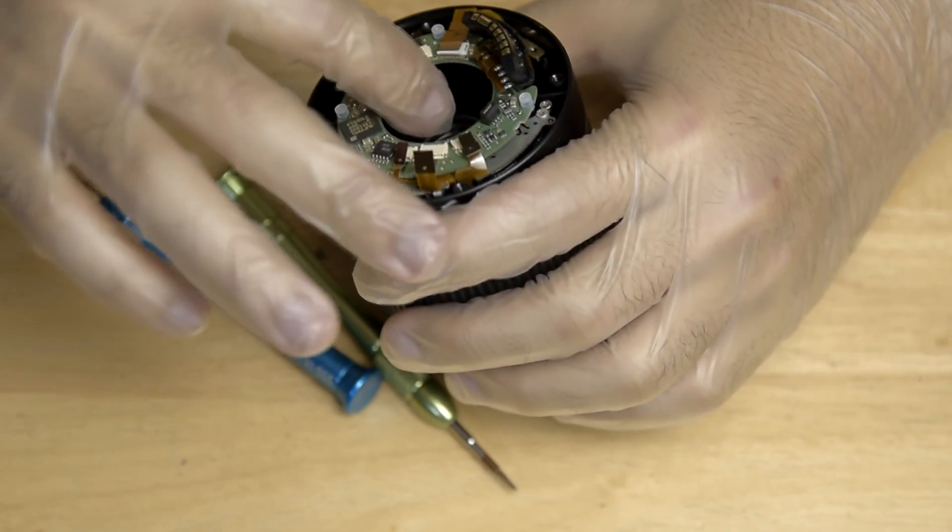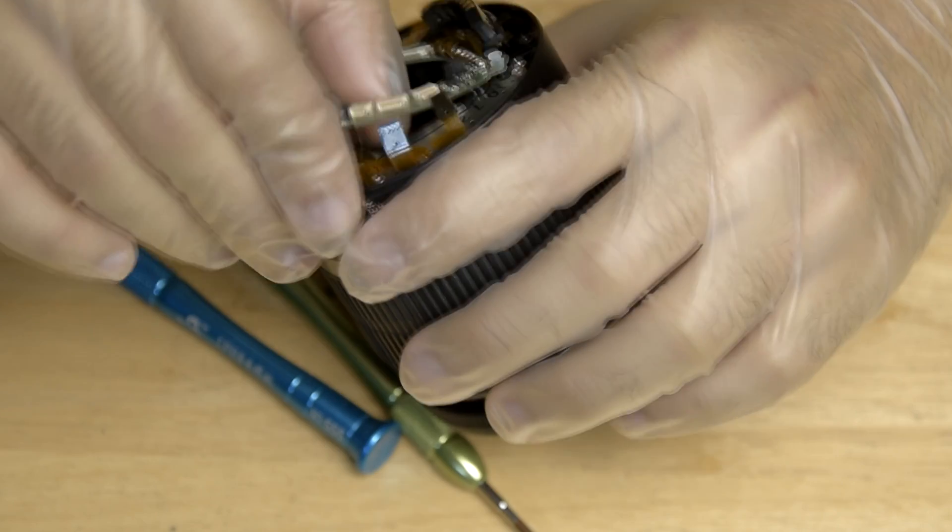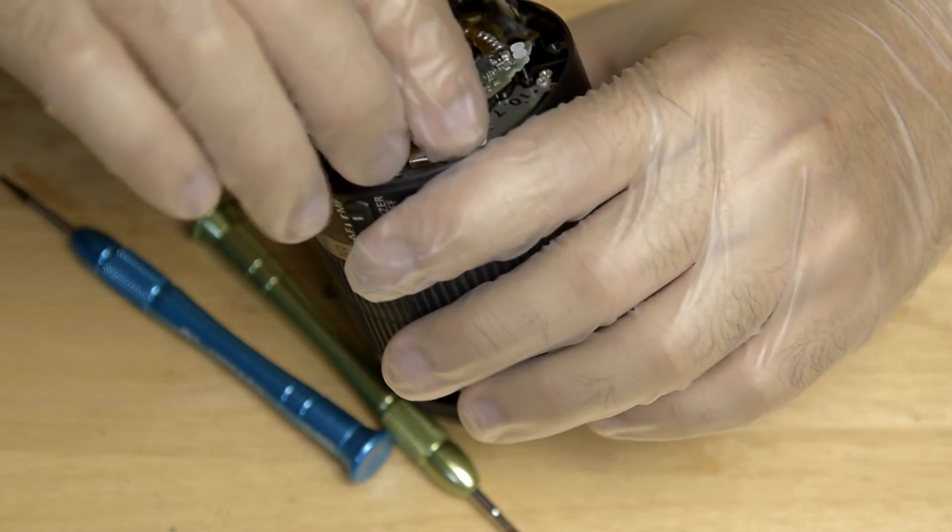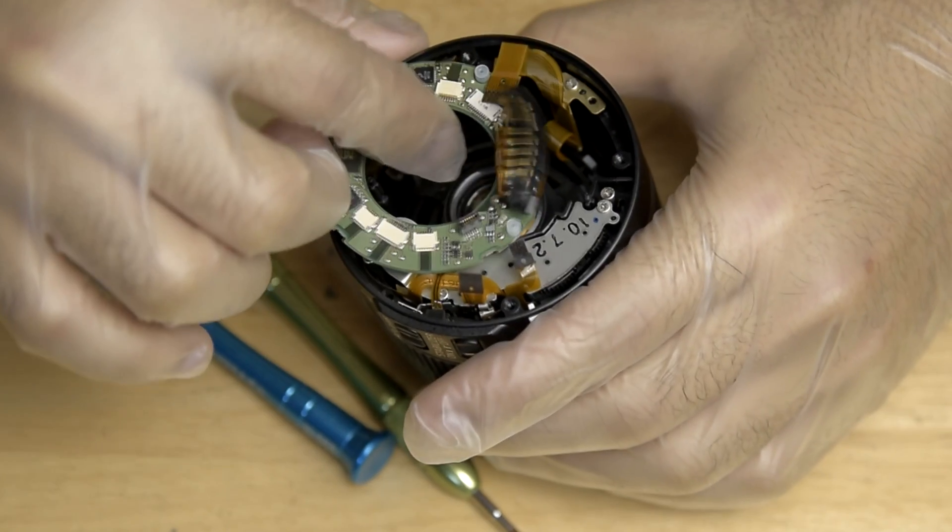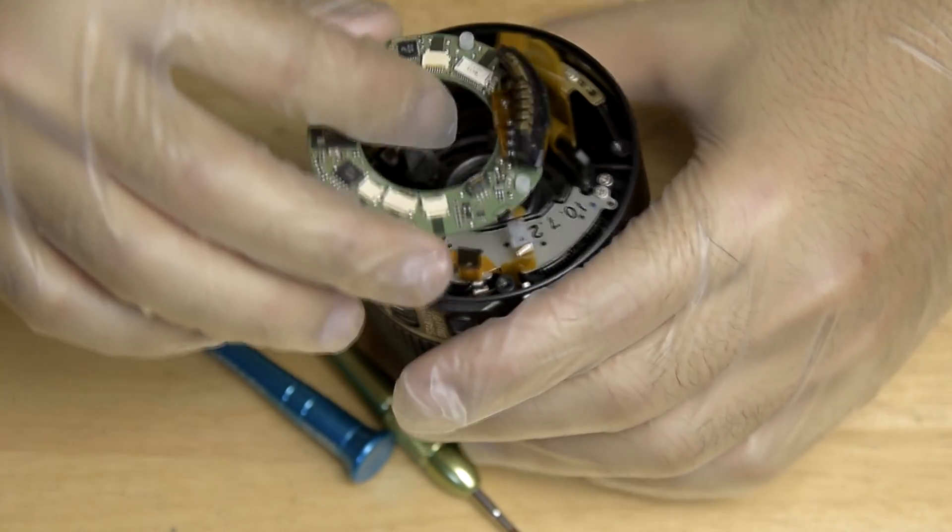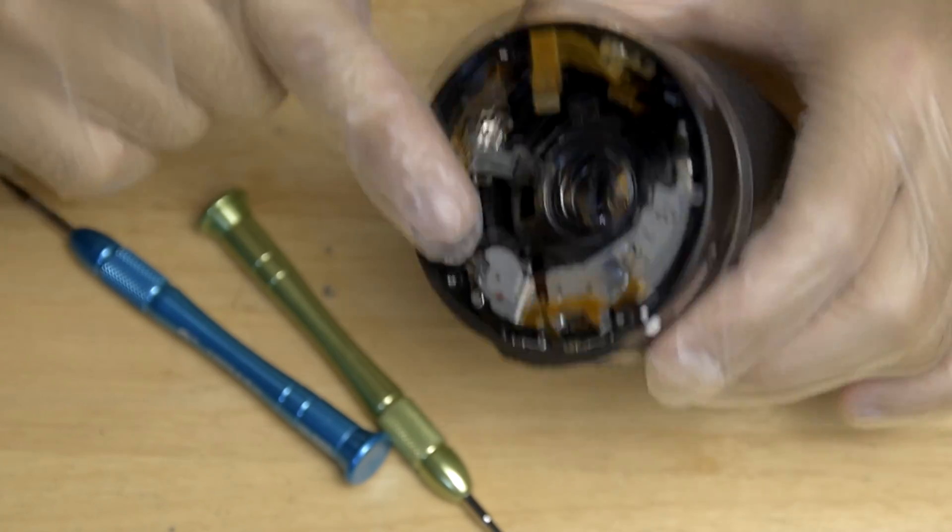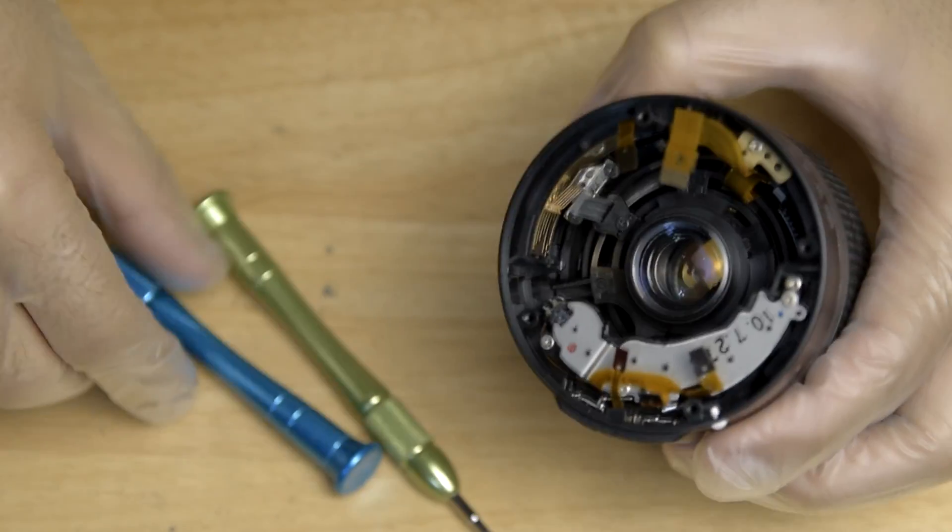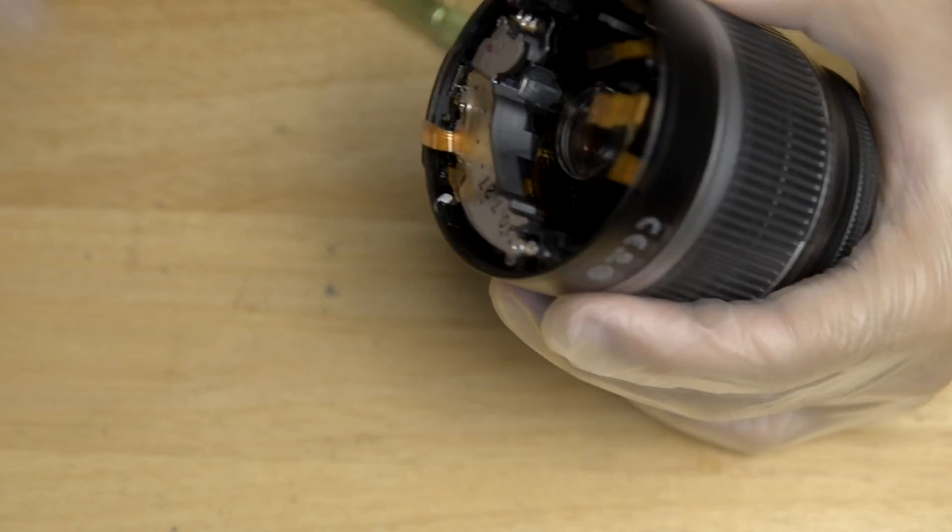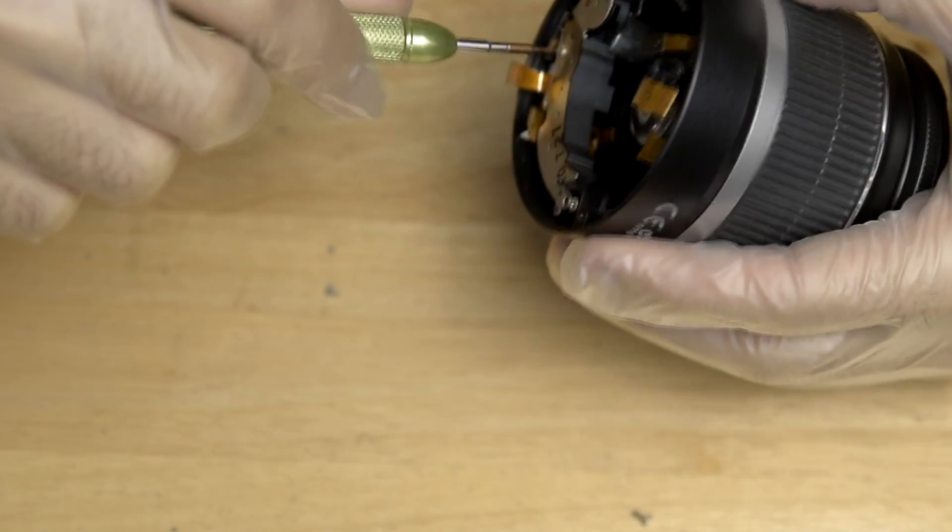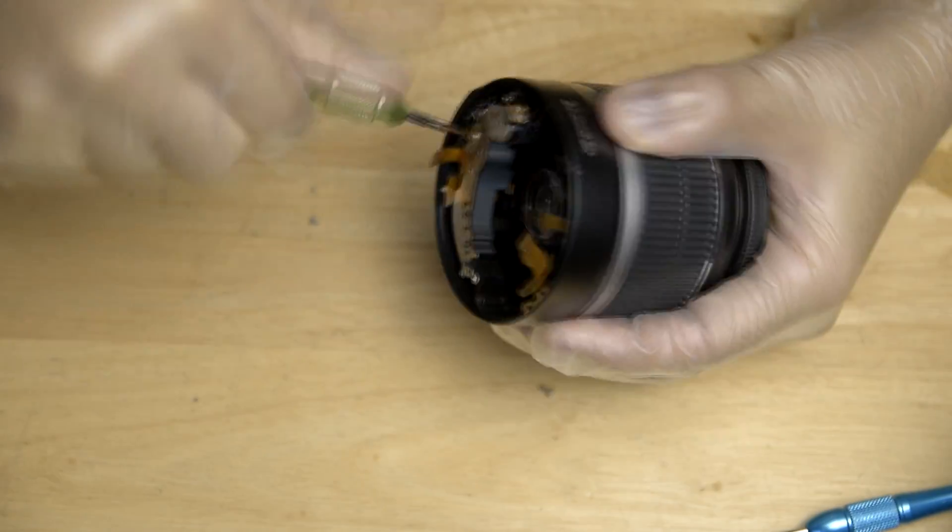After removing the flex cable, we can now remove the board. And then we can now see the autofocus module. To check the gears, we have to remove the cover of the module. There are two screws that you have to remove first for you to access the gears.